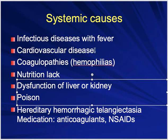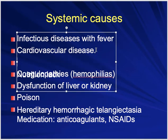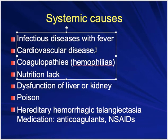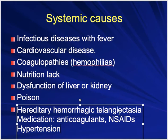Hypertension is a systemic cause, though people often overestimate its importance. Hereditary hemorrhagic telangiectasia, also called Osler-Weber-Rendu syndrome, can also cause epistaxis. Poisons, nutritional deficiencies, and many other conditions can be contributing factors.